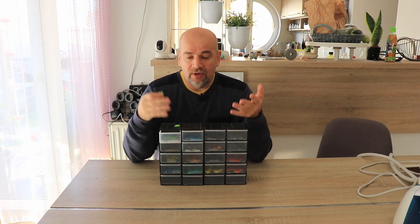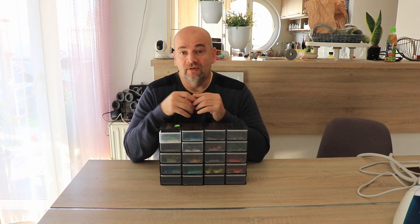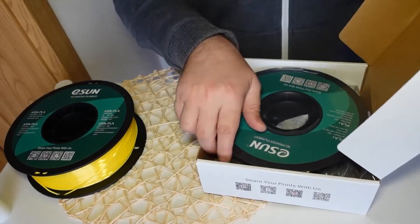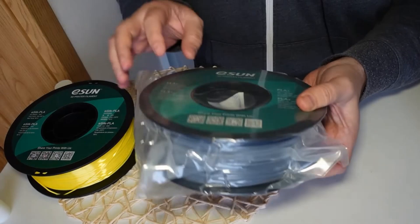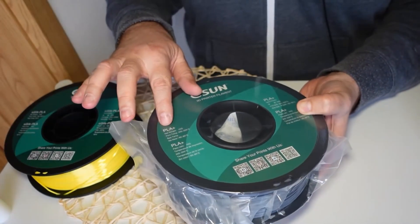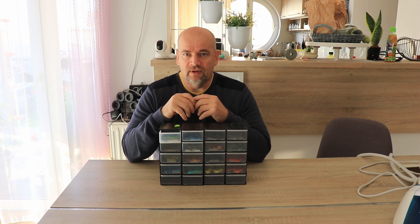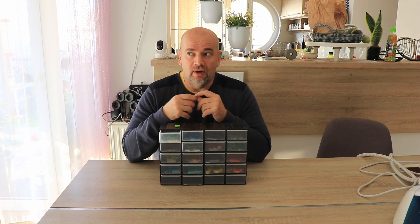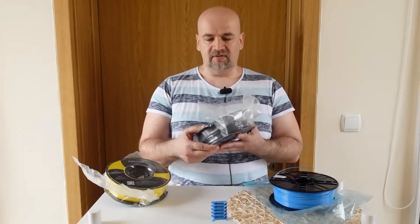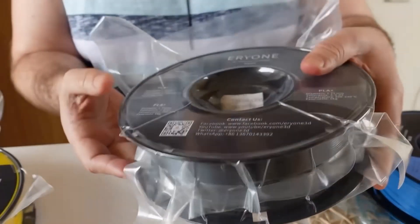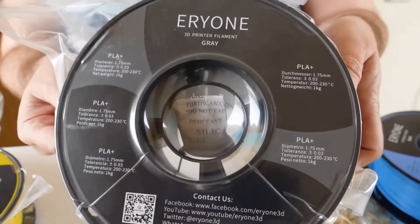I know it's not fair to use silk filaments but for example with eSun I had at that time only that silk filament, but since that I already tested their PLA plus which is great filament with very strong layer adhesion for example. Also from Eryone the PLA is a little bit weaker but the PLA plus and PETG was much stronger.